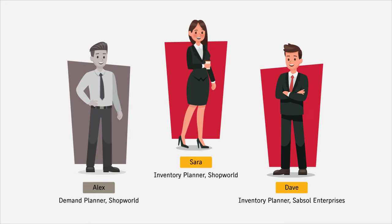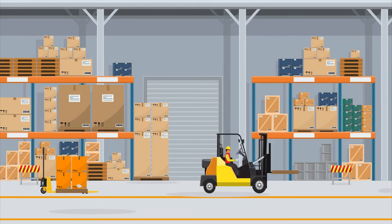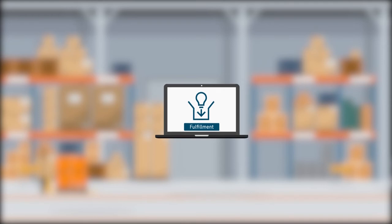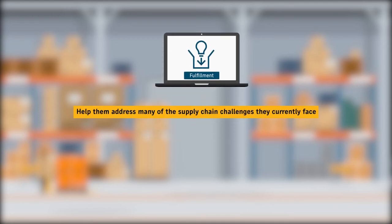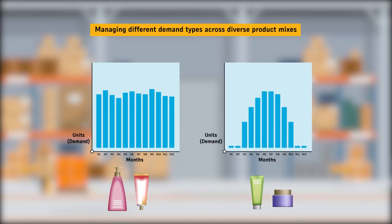One of the biggest replenishment challenges for both organizations is to manage and distribute the optimum levels of inventory required to meet demand throughout their supply chains. To achieve their goals, both companies are implementing Skippo's suite of products including Fulfillment. Both ShopWorld and Sabsal Enterprises see consistent demand for products like shower gels and toothpaste throughout the year, while they see seasonal demand for suntan lotions and cold creams. Both companies forecast their sales using Demand — ShopWorld at a store level and Sabsal at its DCs.